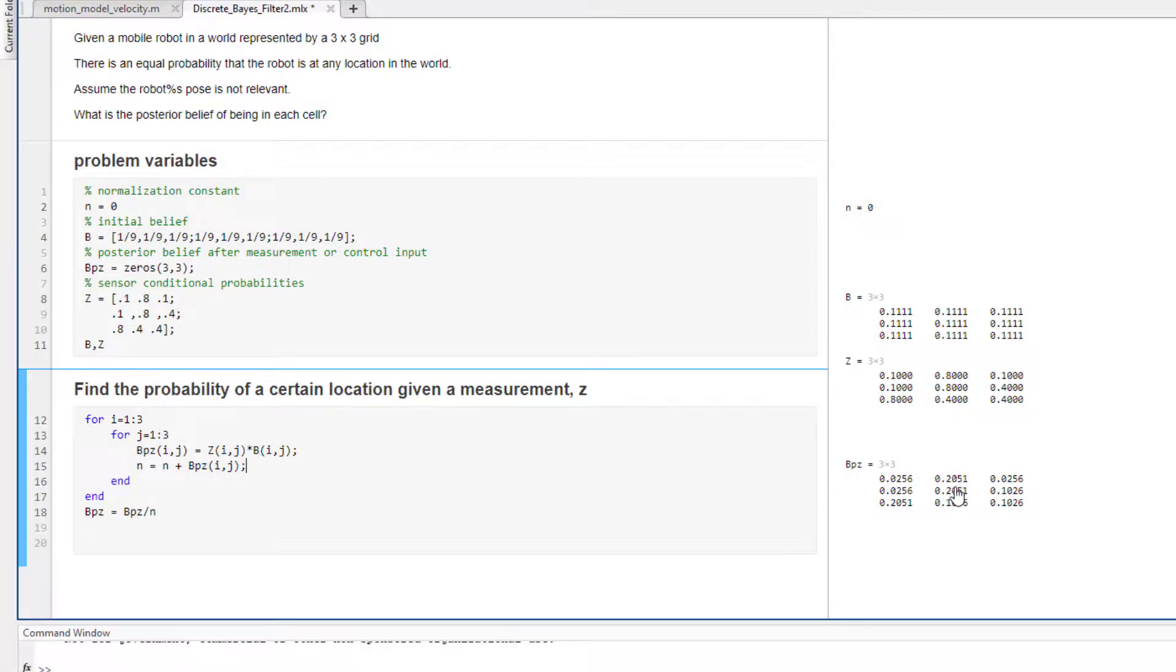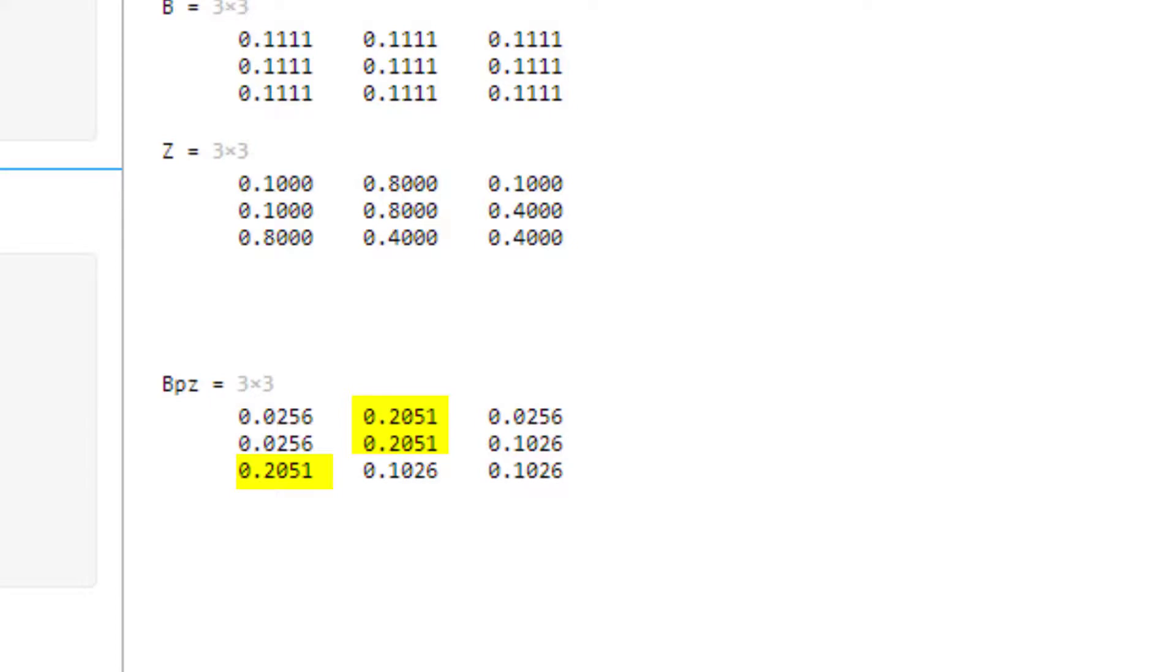So since we see here that the robot is not completely localized because there's still a 33% chance it's in three different places, you would have to continue to move through the world and collect sensor data until you're able to be 100% sure of which cell the robot is now located in. Thank you for coming. I hope you've enjoyed and have a robotastic day.